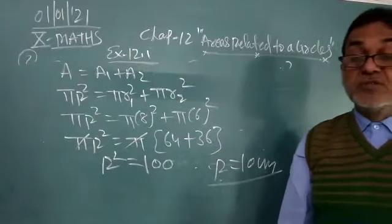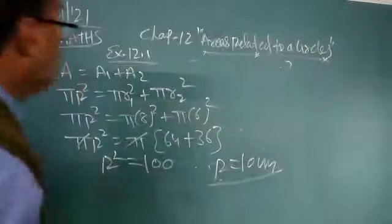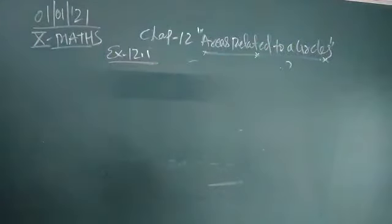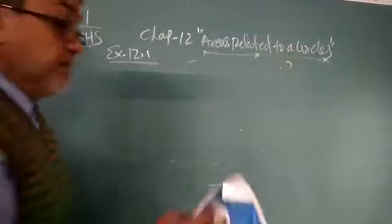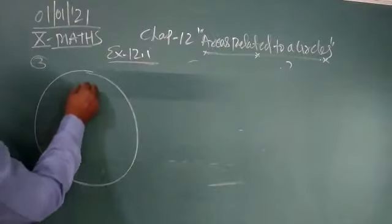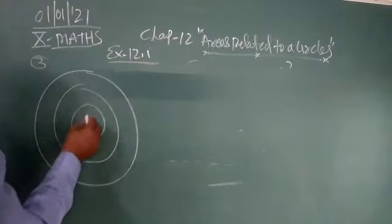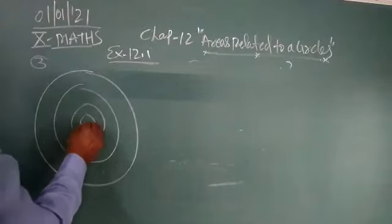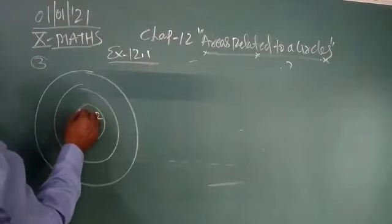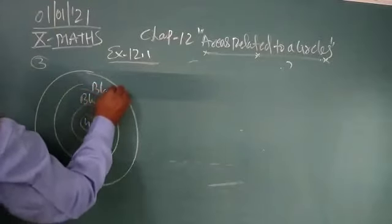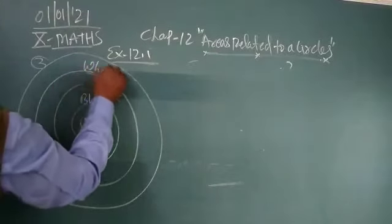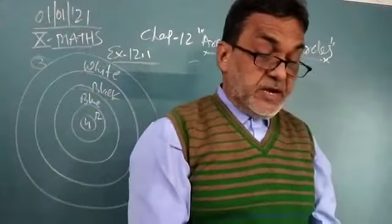Now same method we can use in question number 3. In this question, different types of concentric circles are given. Suppose gold, then red, blue, black, and white. These all are the concentric circles as shown in this figure, 12.3.